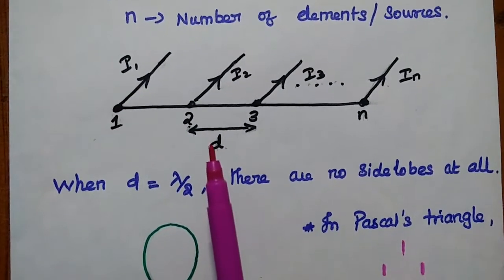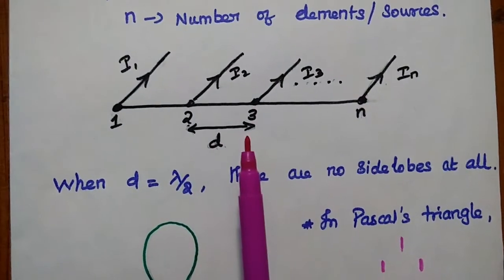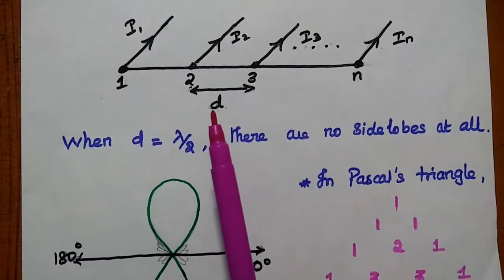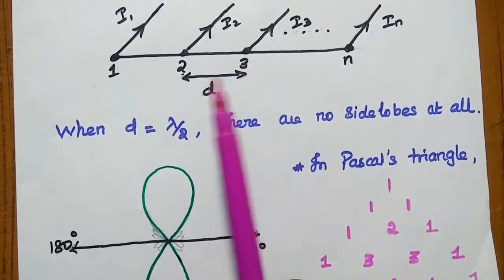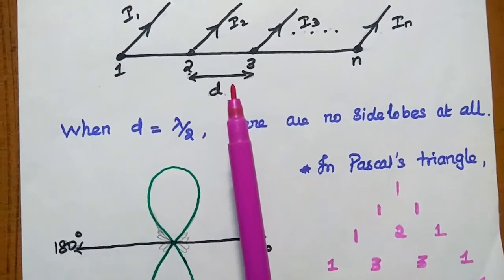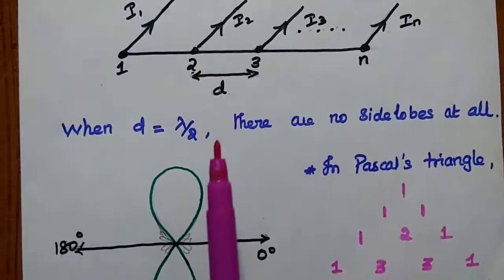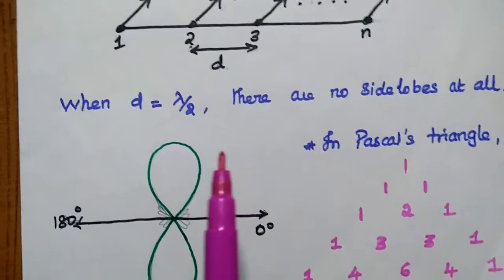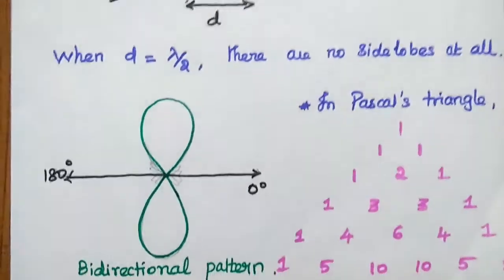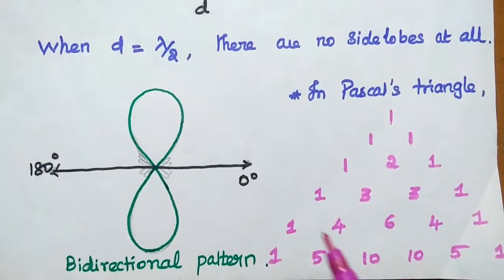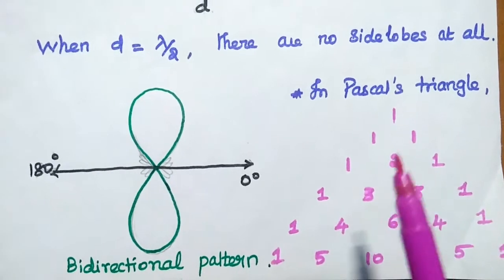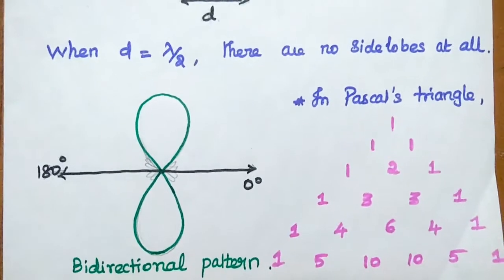Here, we have to assume that the distance between two elements should be lambda by 2. Whenever the separation, that is the distance between two elements, is lambda by 2, then there are no side lobes in this array pattern.